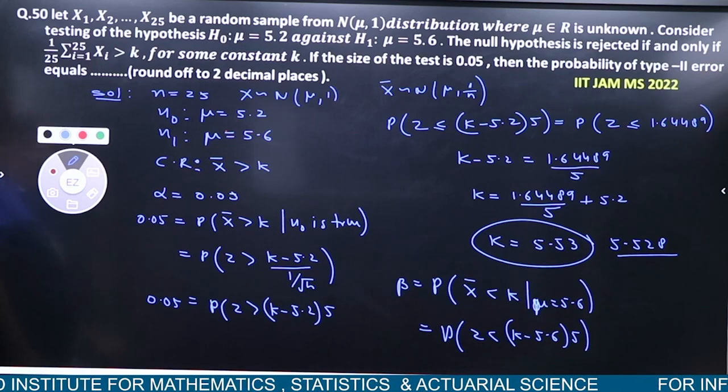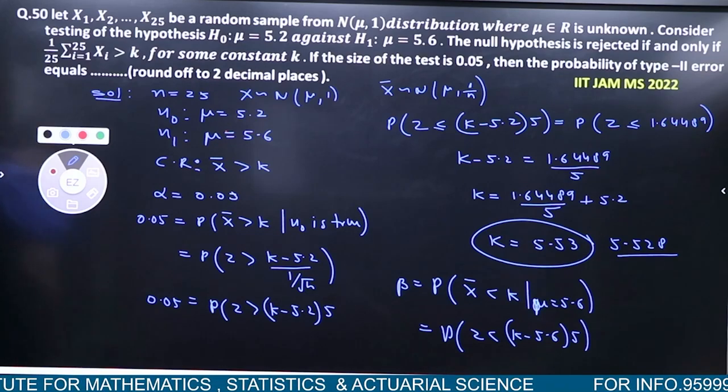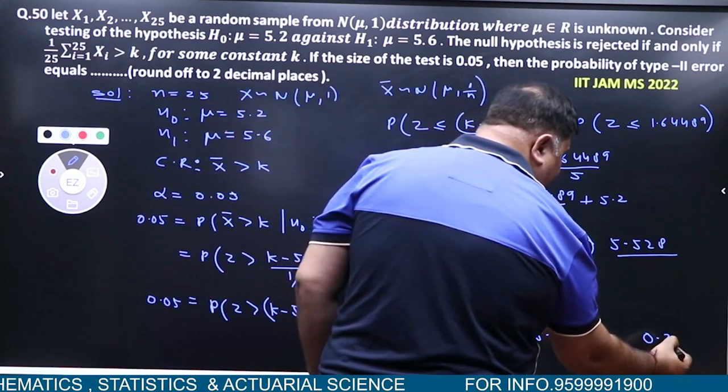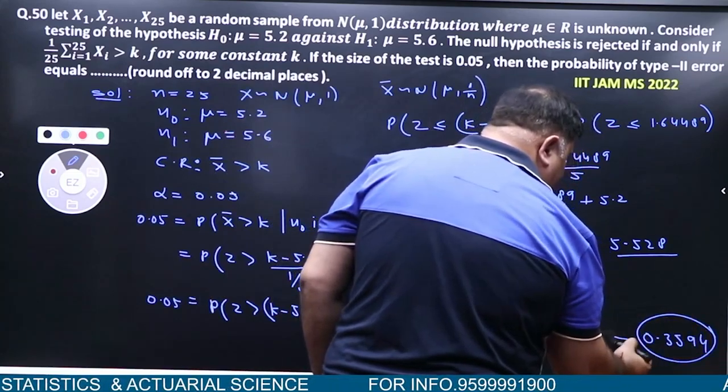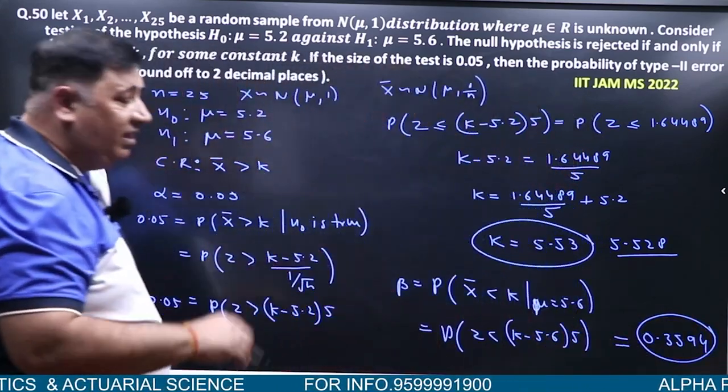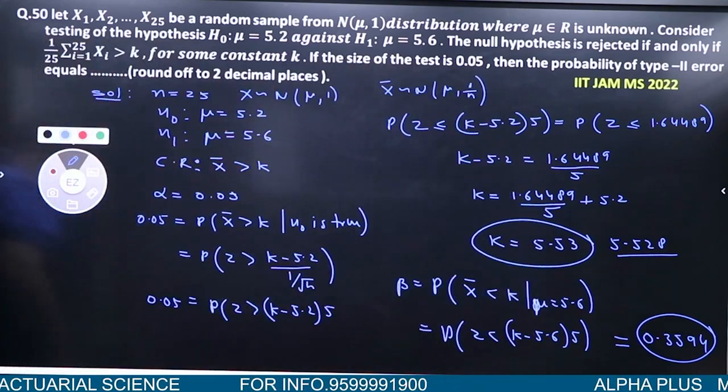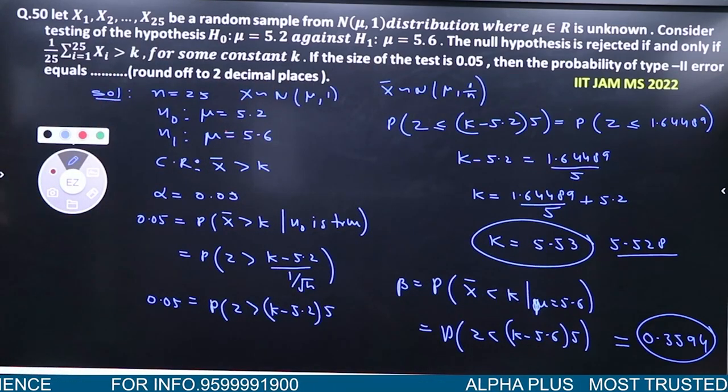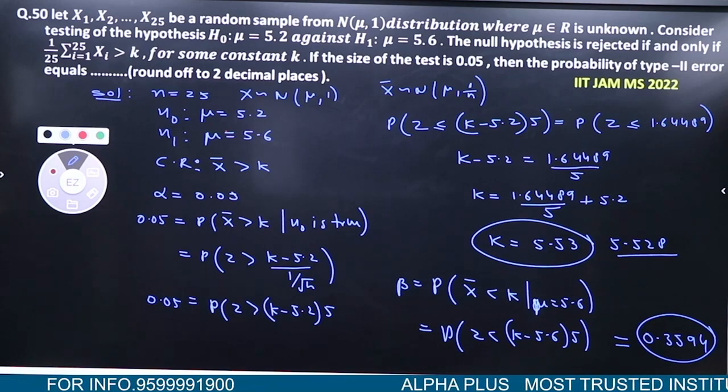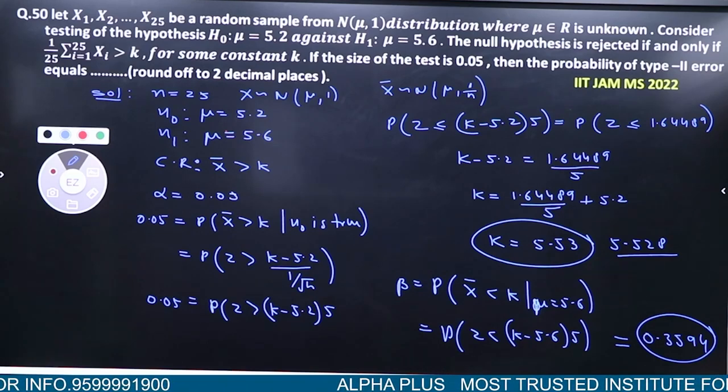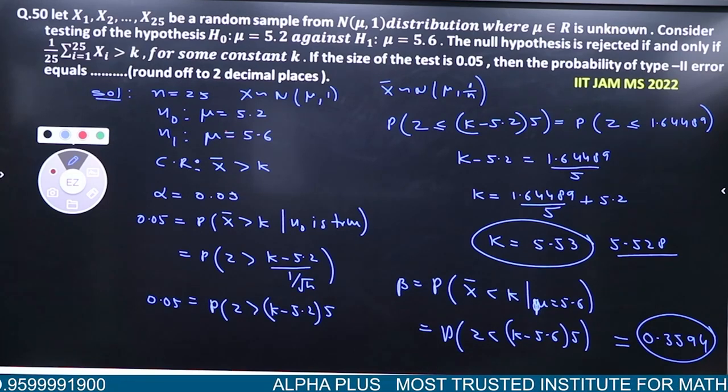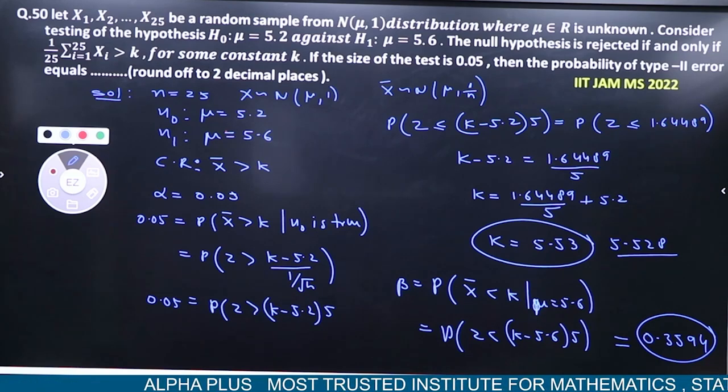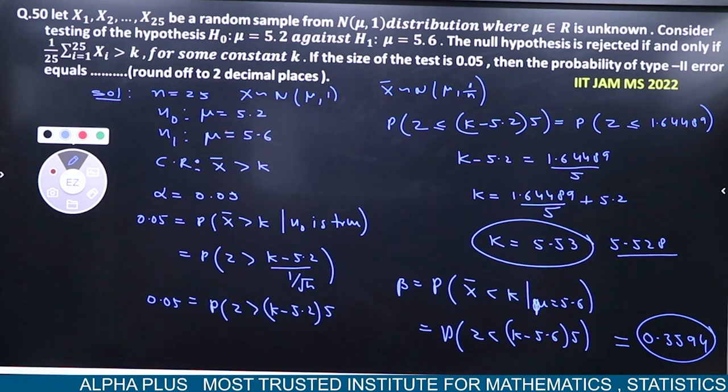Beta aapka answer: 0.36 approximately. Actually 0.3594, but answer is 0.36 for Type II error.